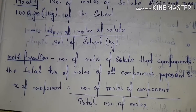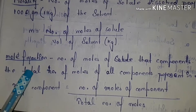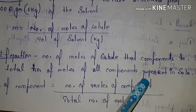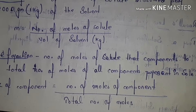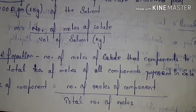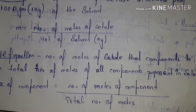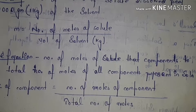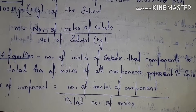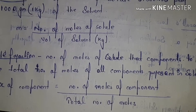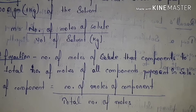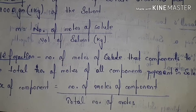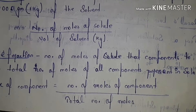Mole fraction: a very well-known property. It is the number of moles of that component divided by the total number of moles of all components present in the solution. To find mole fraction: divide the number of moles of a component by the total number of moles — that gives the fraction for that particular component.